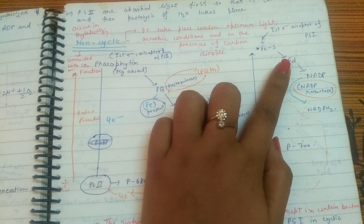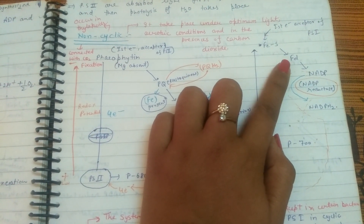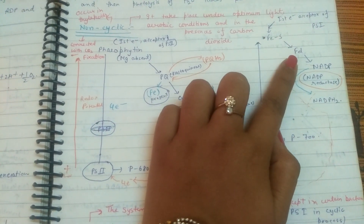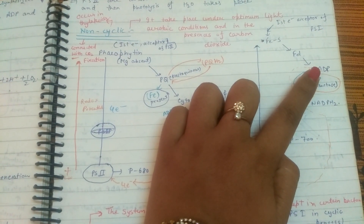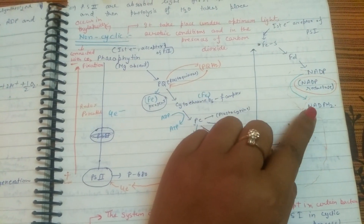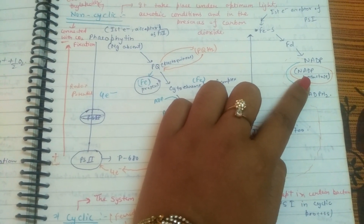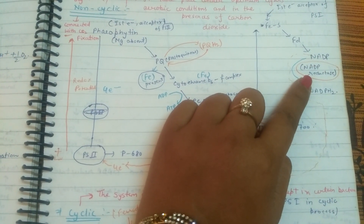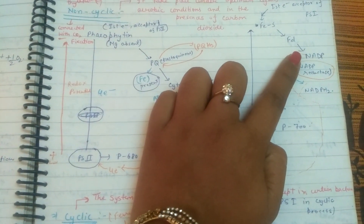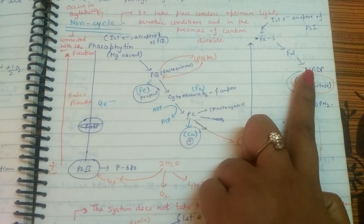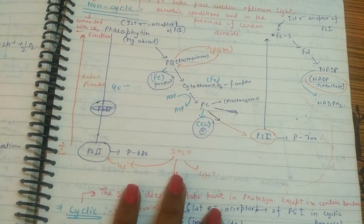After iron sulfide, the electron is again transported downhill to another electron acceptor, ferredoxin (FD). From ferredoxin, the electron is transported to NADP. After accepting hydrogen, NADP gets converted into NADPH2 in the presence of NADP reductase. This enzyme is present on the outer surface of the thylakoid membrane. The NADP gets reduced using hydrogen from the splitting of water.